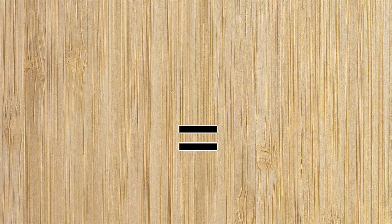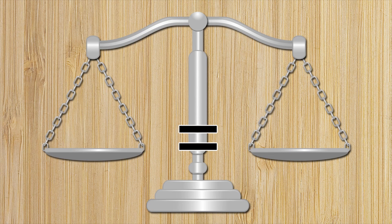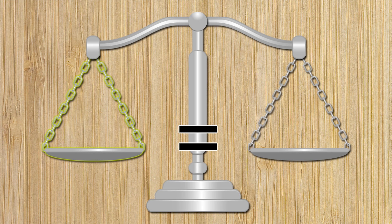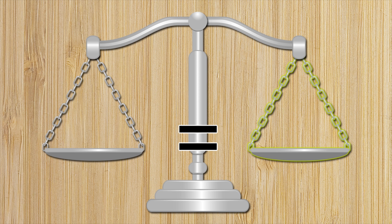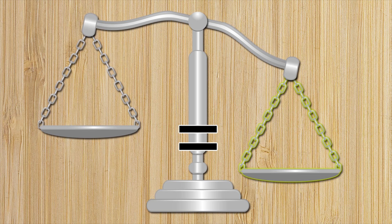Think of the equals sign as a set of scales that you always want to be balanced. Whatever goes on this side, before the equals sign, must be the same as what goes on this side, after the equals sign. Otherwise, the scales will tip over in one direction.